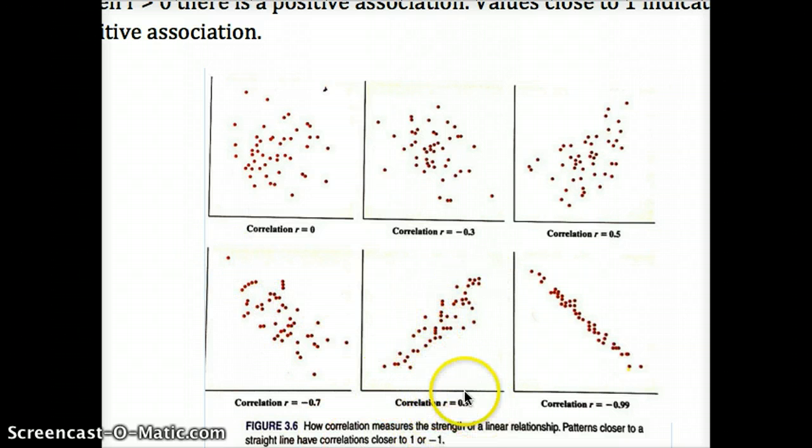A positive association - r is 0.9. We tend to see more and more of a fit. r is negative 0.99. You can see that this is a strong negative association. Looks like an inverse relationship. Values are all pretty close to our best fit line or our regression line.